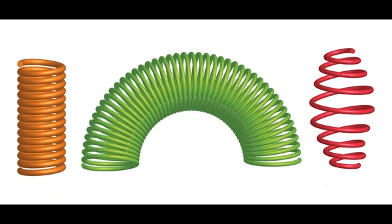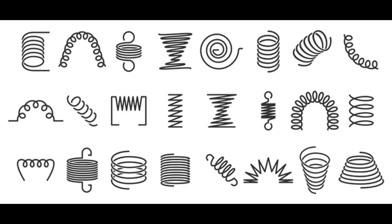In the formula, XL is the inductive reactance in ohms, pi is a mathematical constant approximately 3.14159, f is the frequency of the AC signal in hertz, and L is the inductance of the coil in henries.